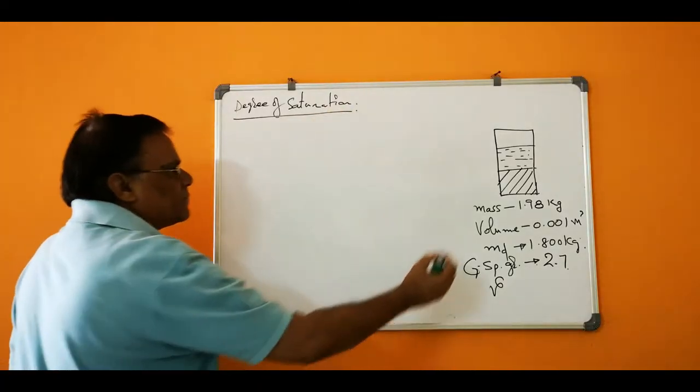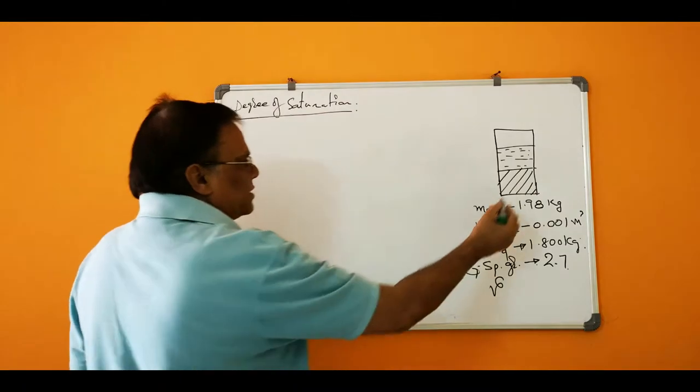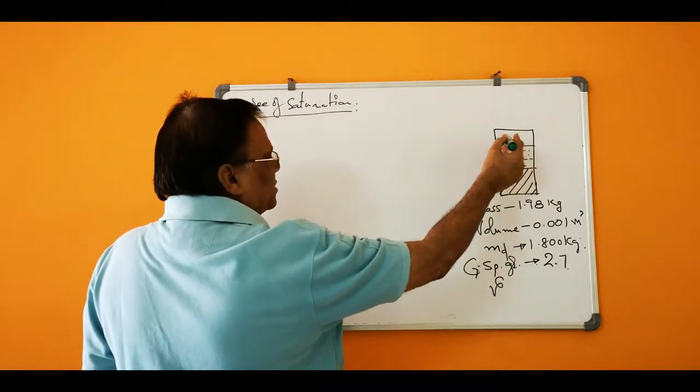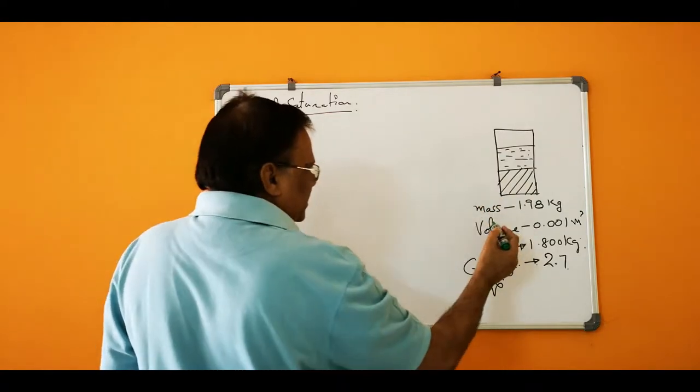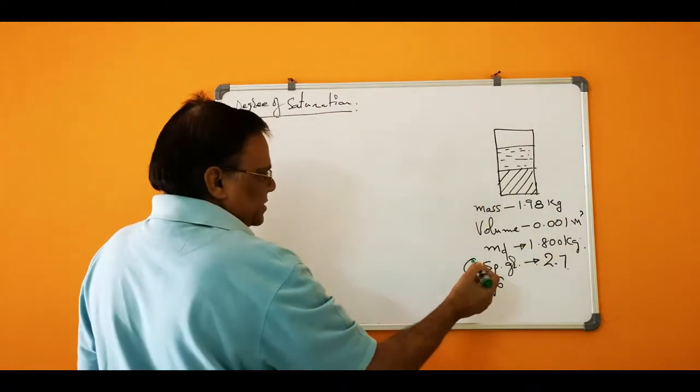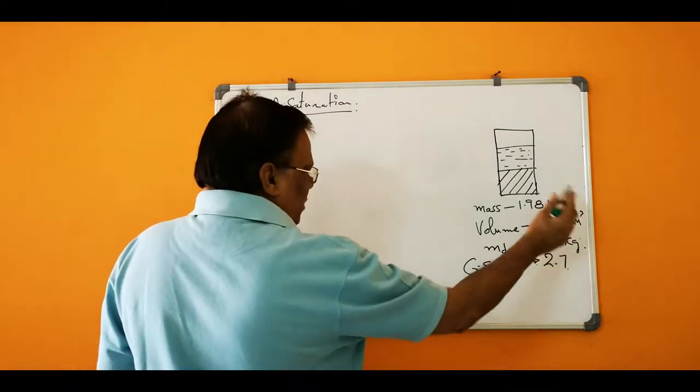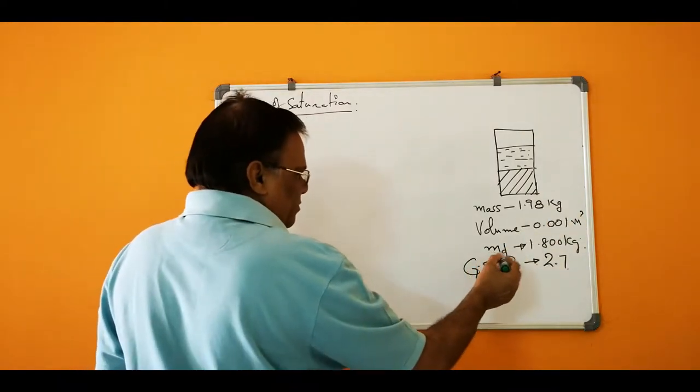Degree of saturation. This is the sample, and this is the solids, and this water is there, and this is air. The mass is given as 1.98 kg and volume is given as 0.001 m³, and mass dry density